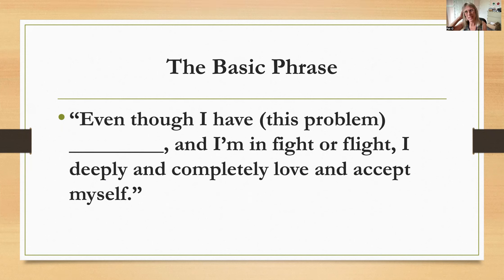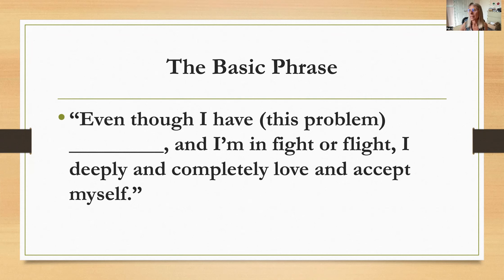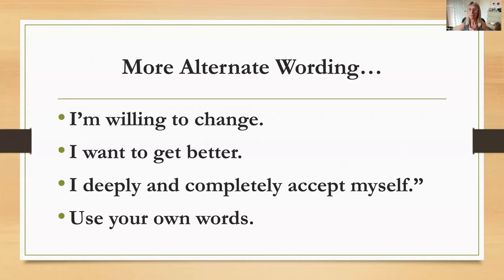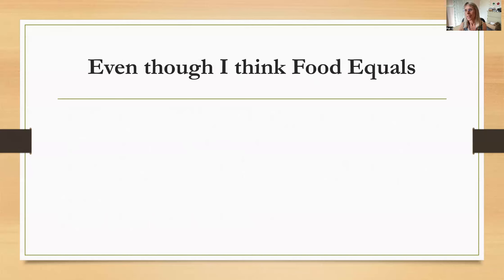With emotional freedom technique tapping, I'm going to take you through some of my triggers and my links, and then you can substitute the words for what your links are. The basic phrase for EFT is: 'Even though I have this' — for me it was compulsive overeating — 'I deeply and completely love and accept myself.' That's difficult for a lot of people to say, so you can just say 'I deeply and completely accept myself,' or 'I would like to,' or 'I'm willing to,' or 'I'm working on it.' Choose a phrase that works for you.